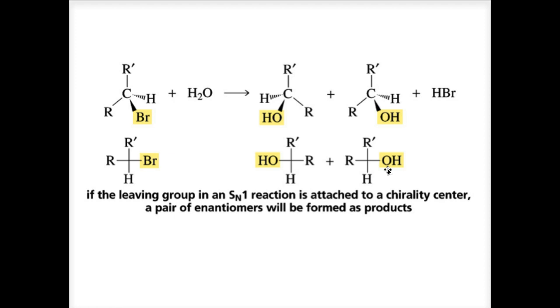In an SN1 reaction of an alkyl halide in which the leaving group is attached to an asymmetric carbon, two stereoisomers are formed because attack of the nucleophile on one side of the plane or carbocation forms one stereoisomer, and attack on the other side produces the other stereoisomer. Here's the asymmetric carbon.